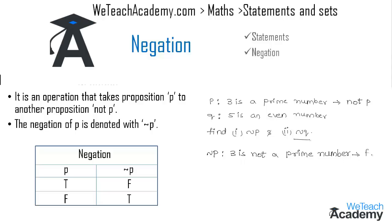Now let us find the value of not q. Here we have the statement q as '5 is an even number', which is a true statement. So the negation of q, that is not q, would be '5 is not an even number', which is a true statement.